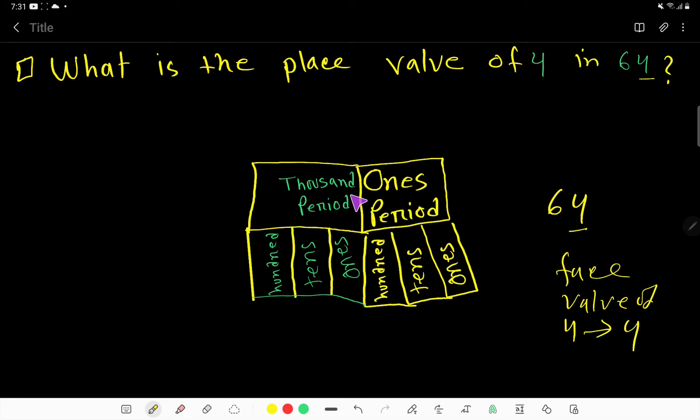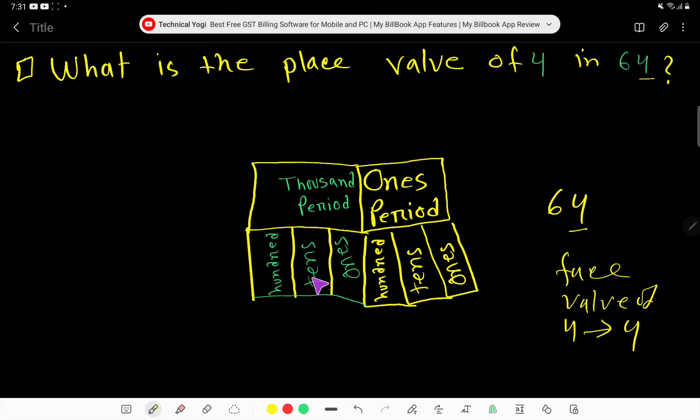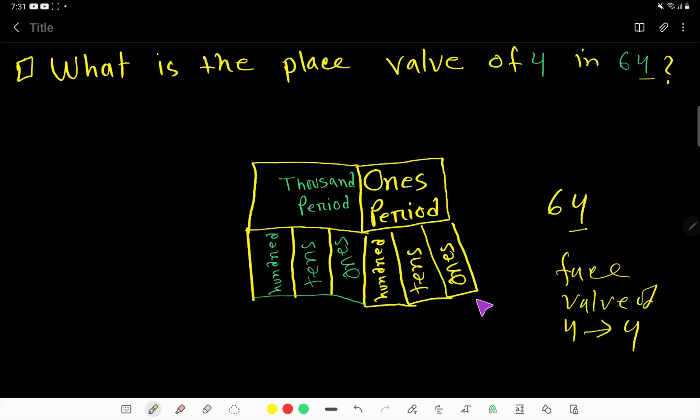In thousands period, we have ones thousands period, tens thousands period, and hundreds thousands period. Now write this 64 number. This 4 will come here and 6 will come here. You have to start with ones period, so the position of 4 is in ones column.